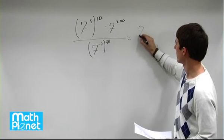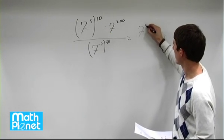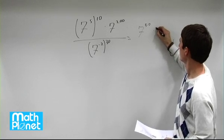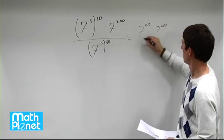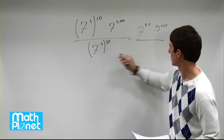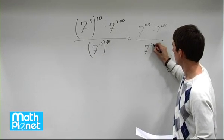So that gives us 7 to the power of 5 times 10, still times 7 to the power of 200, all over. Now we have 7 to the power of negative 2 times 30.